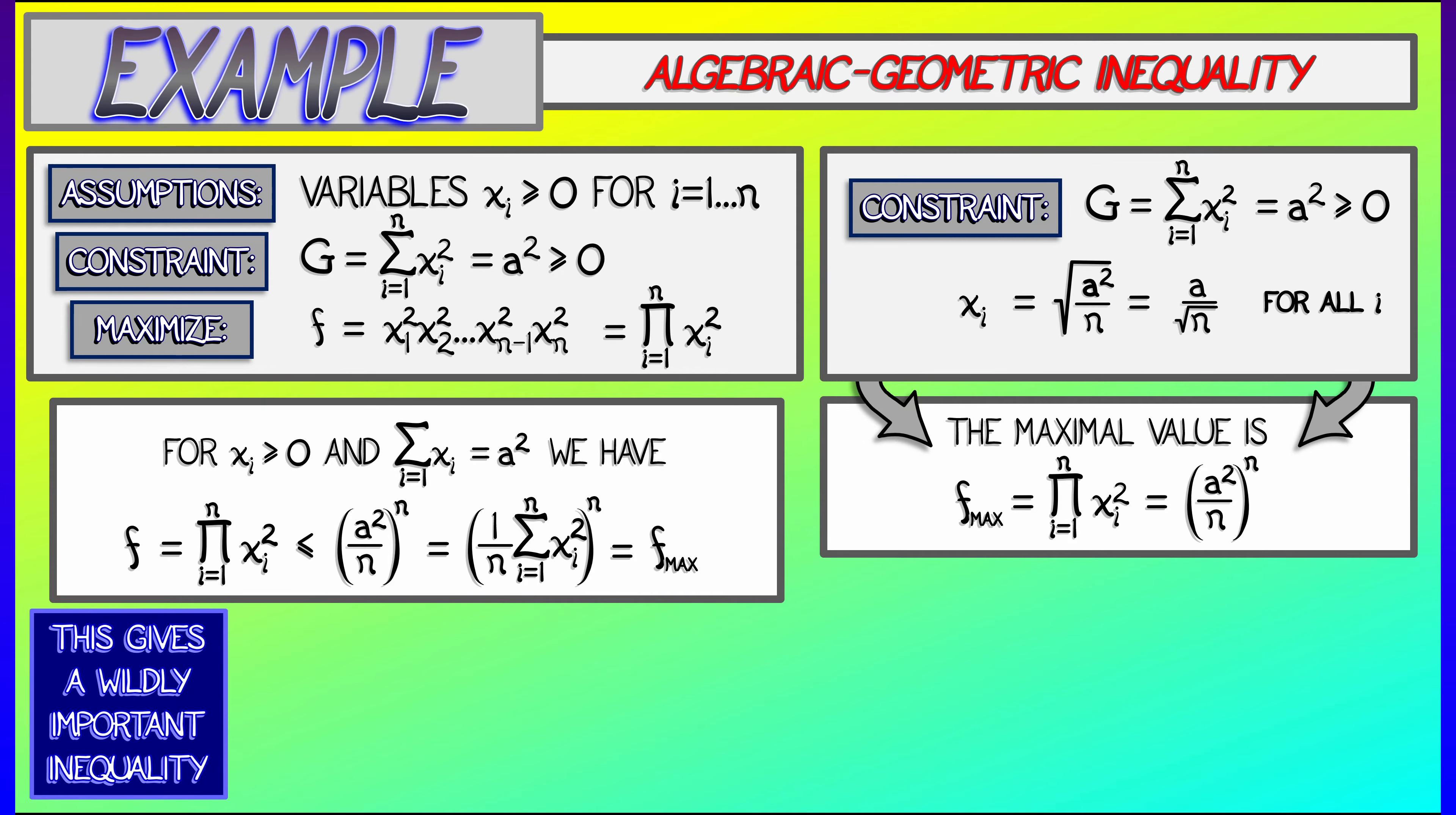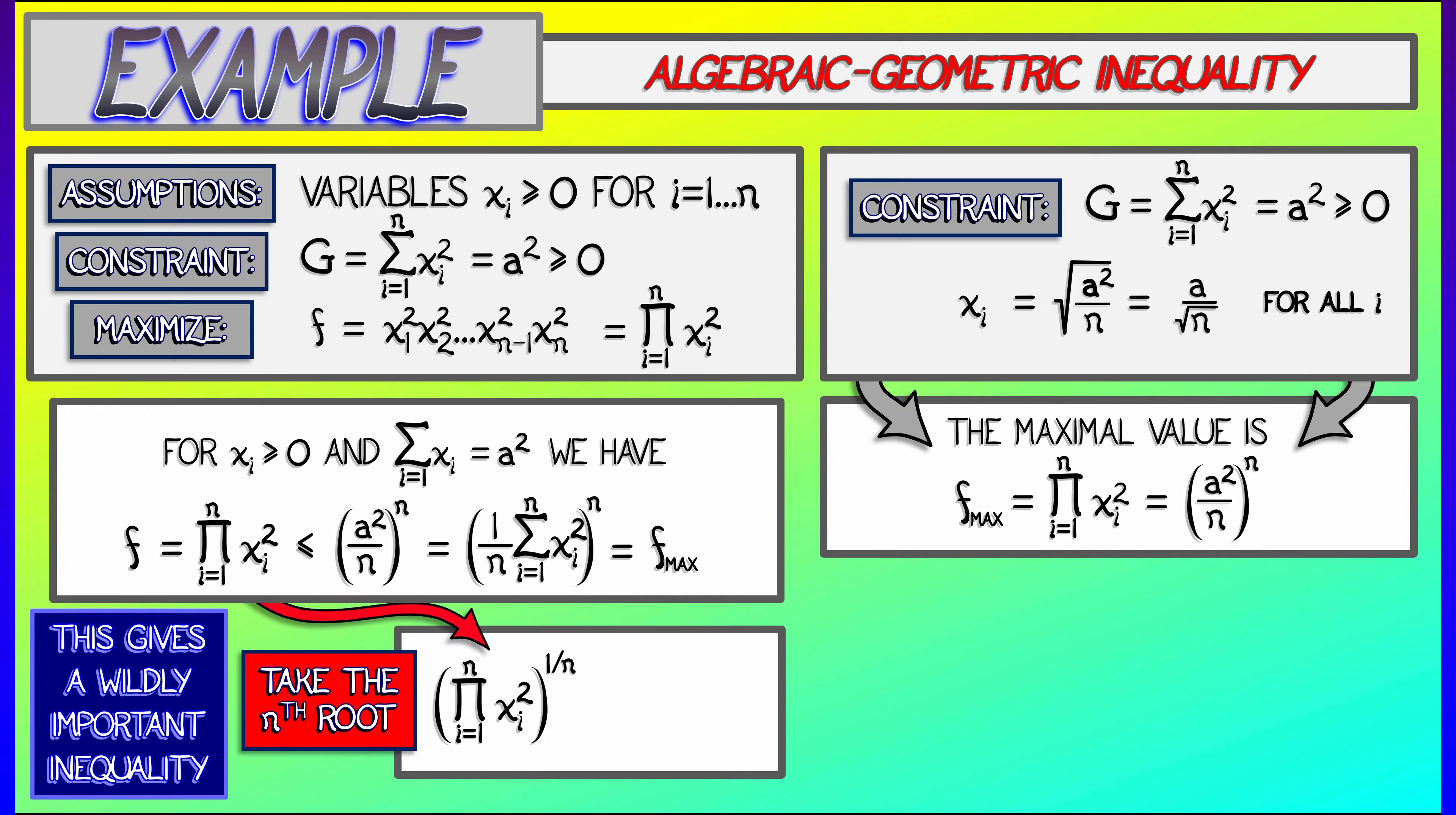Now why is this important? This is important because it gives us an inequality. If you're not at the maximum value, you have this less than or equal sign. Take the nth root of both sides of this inequality, and what we get is that the product of the xi squared's nth root is less than or equal to the sum of the xi squareds divided by n.